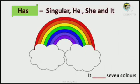It. It dash seven colors. It is in their rule box? Yes. It is there in their rule box. So, we will circle it and we will write has. So, it has seven colors.